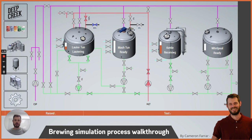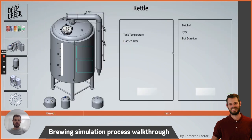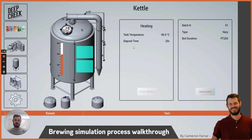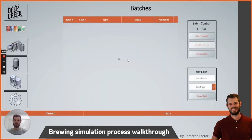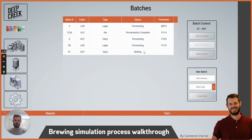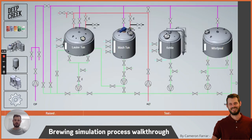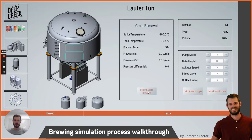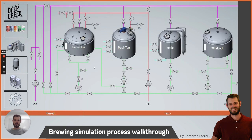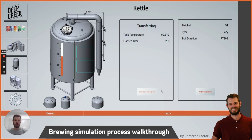The kettle is receiving it — it happens quite fast — and it'll heat up until it gets to boiling, again 20 seconds. On the batch page it's showing that it's currently boiling. On the lautertun we need to confirm that the grain has been removed, and then it'll rinse it with hot water.